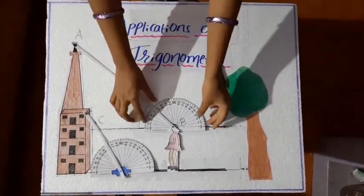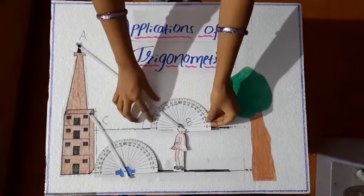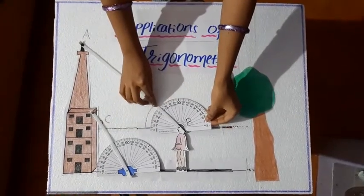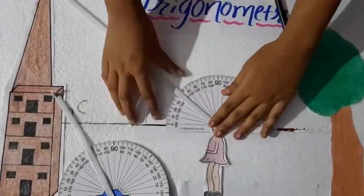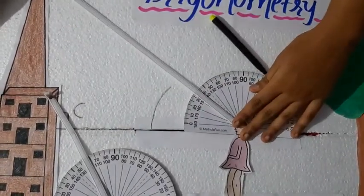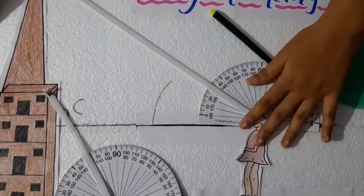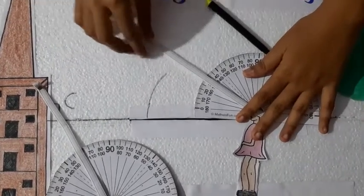See, we can change this angle of elevation. Before it was 45 degree. We can take this to 30 degree like this.